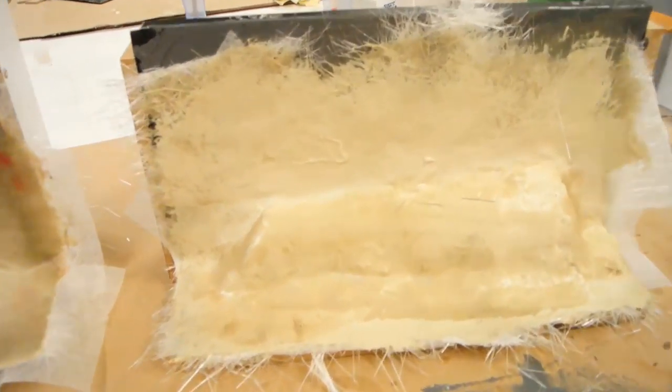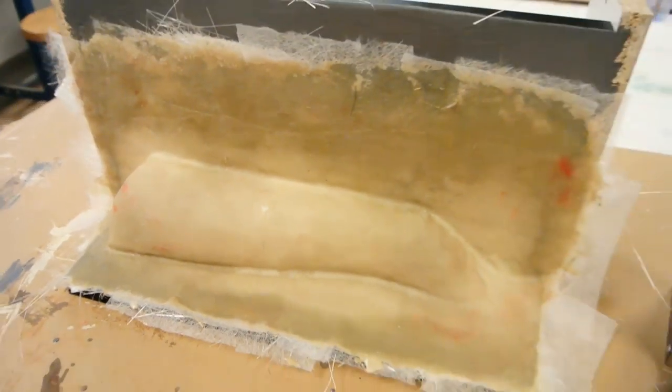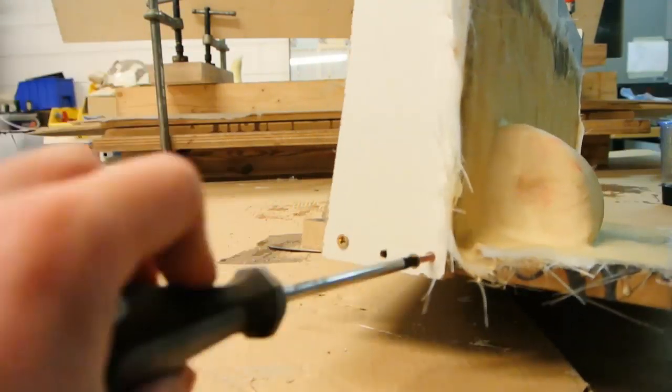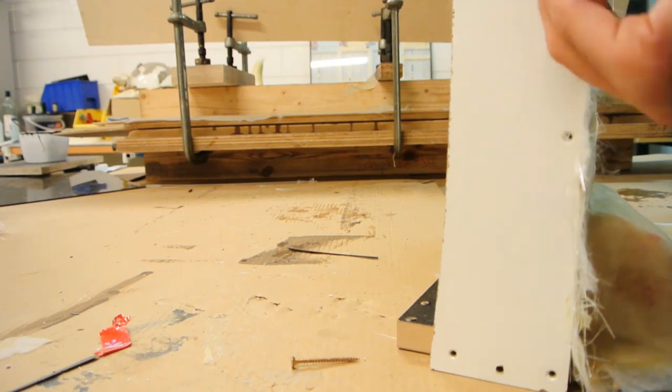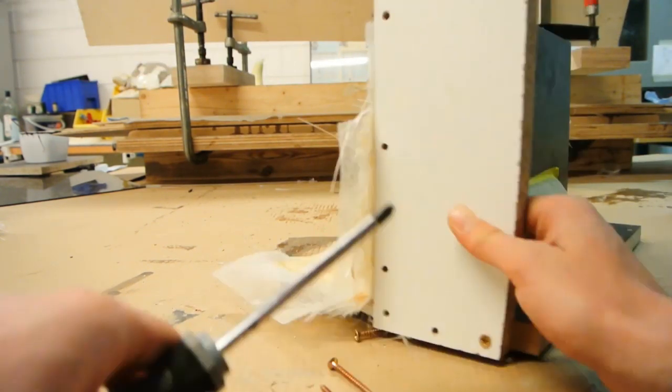This is how it should look. The resin is brown first, then turns white when cured. After that, you can remove the structure built around the part. This exposes the other side where we can add the second part of the mold.